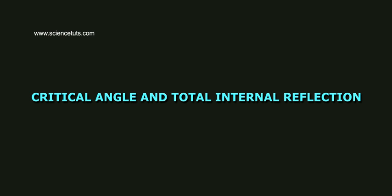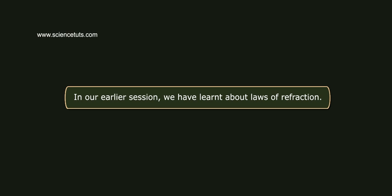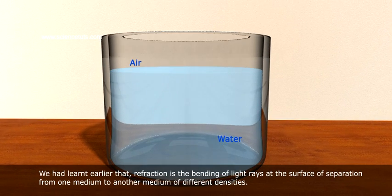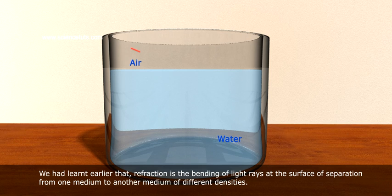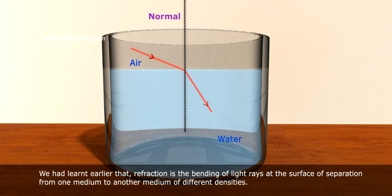Critical Angle and Total Internal Reflection. In our earlier session, we have learned about laws of refraction. Refraction is the bending of light rays at the surface of separation from one medium to another medium of different densities.